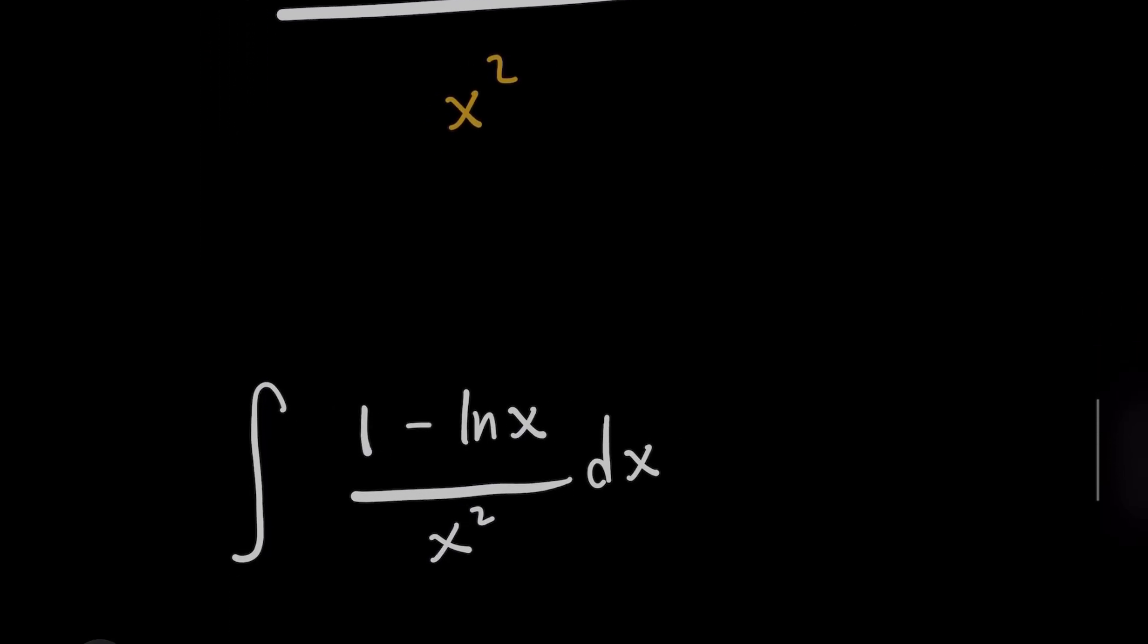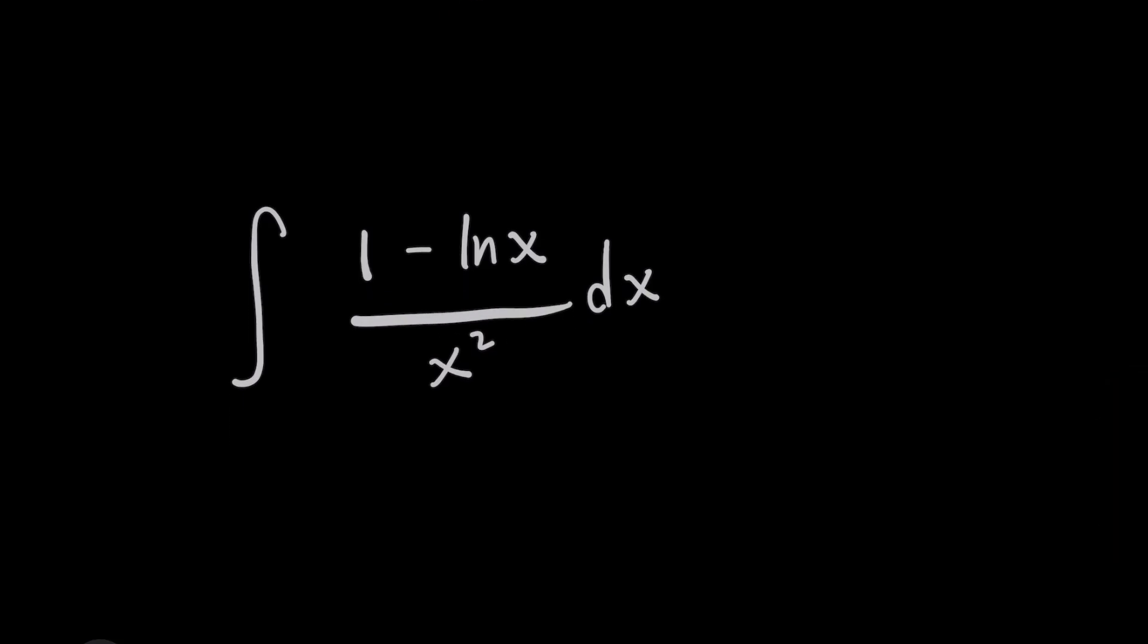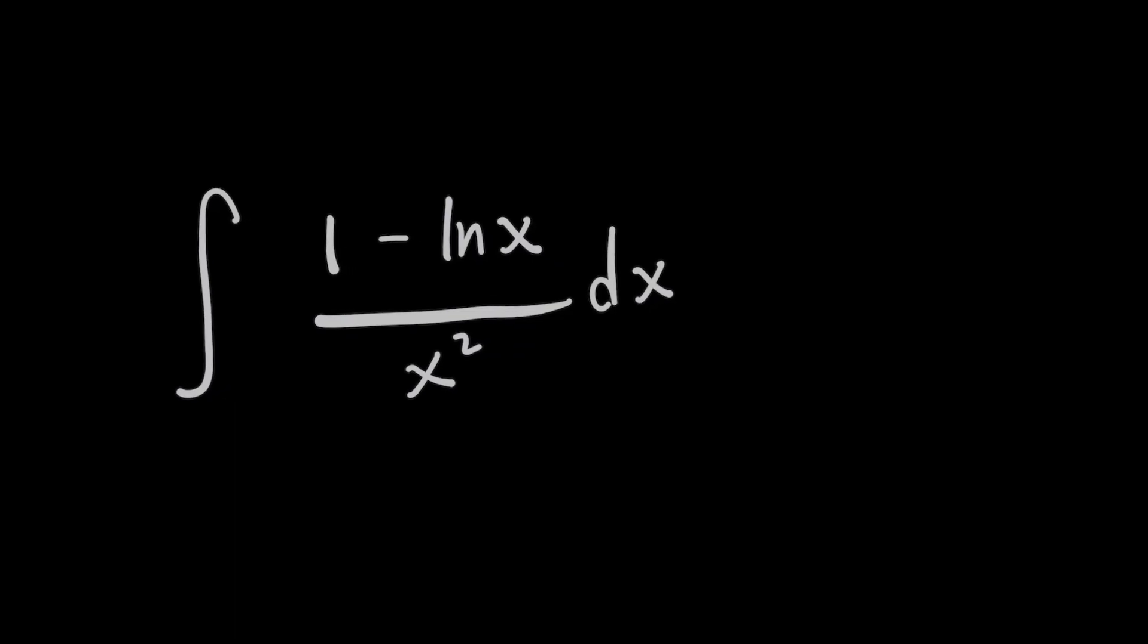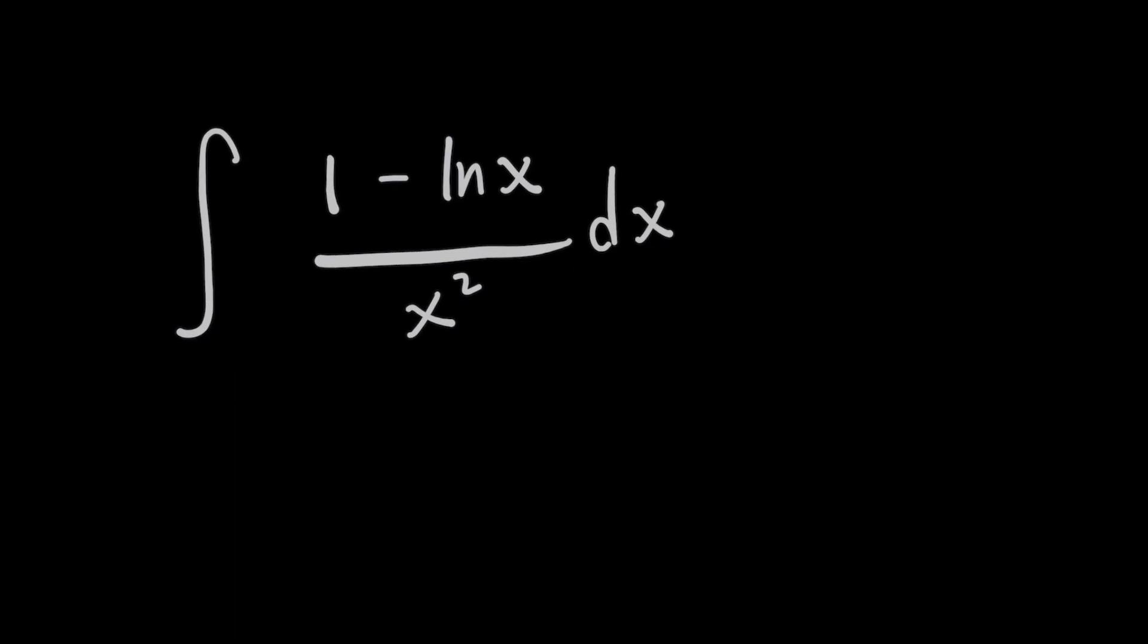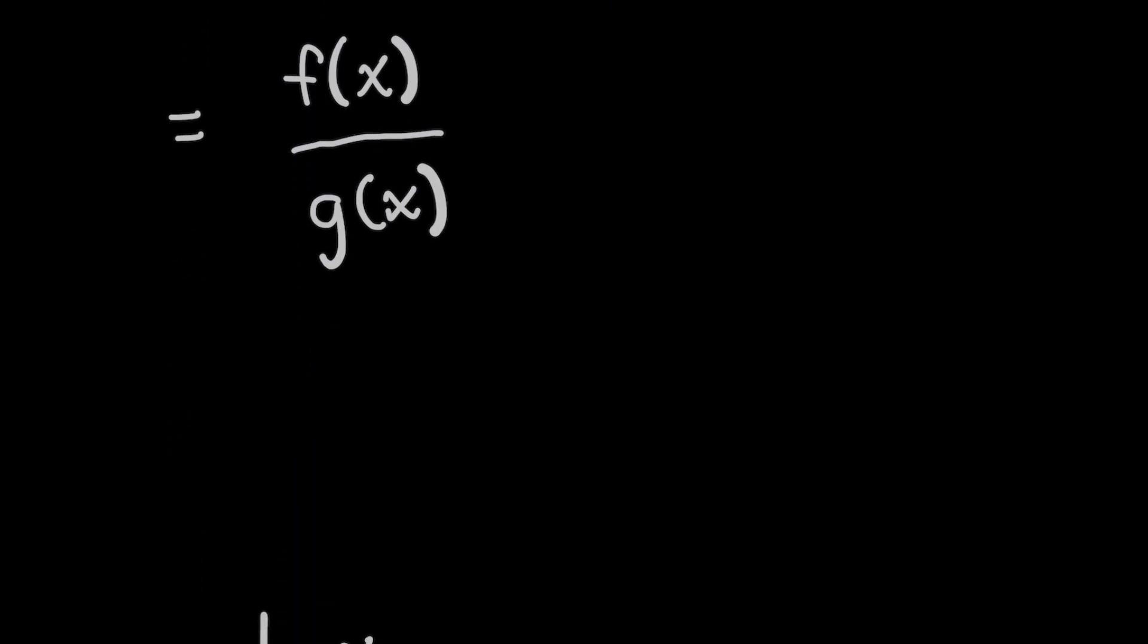And now, for the integral, instead of wasting time on integration by parts, we know that 1 minus natural log of x over x squared came from somebody taking the quotient rule of f of x over g of x to end up with this fraction here. And we know what those are now. This gives you this final answer.